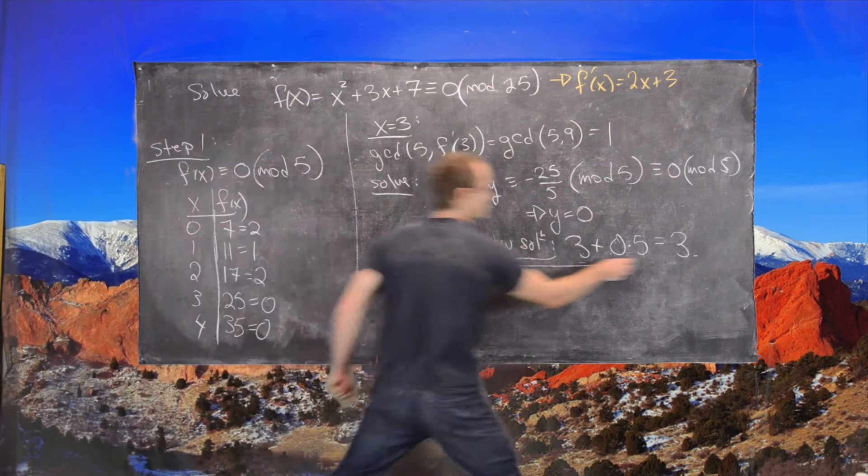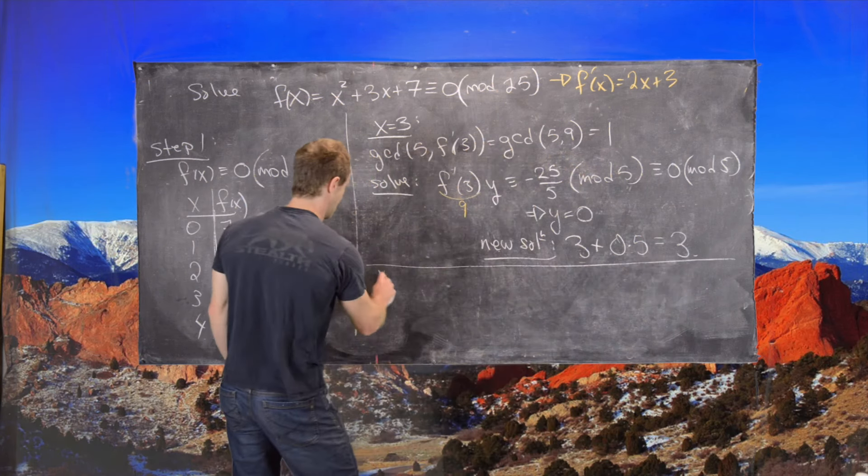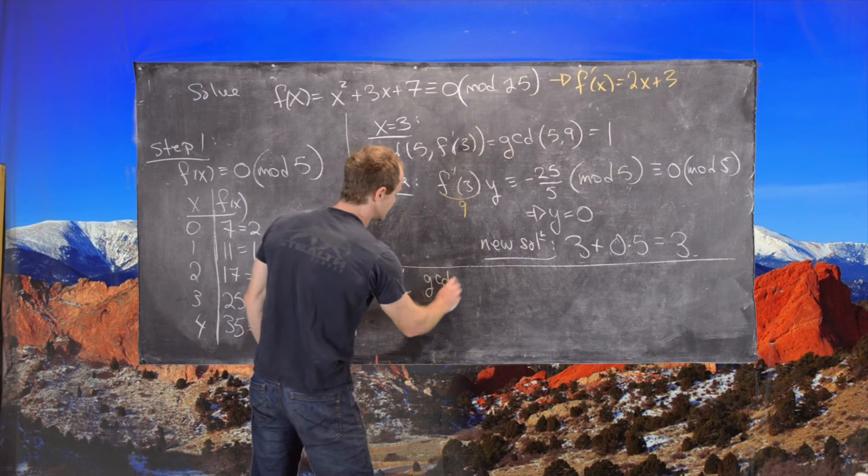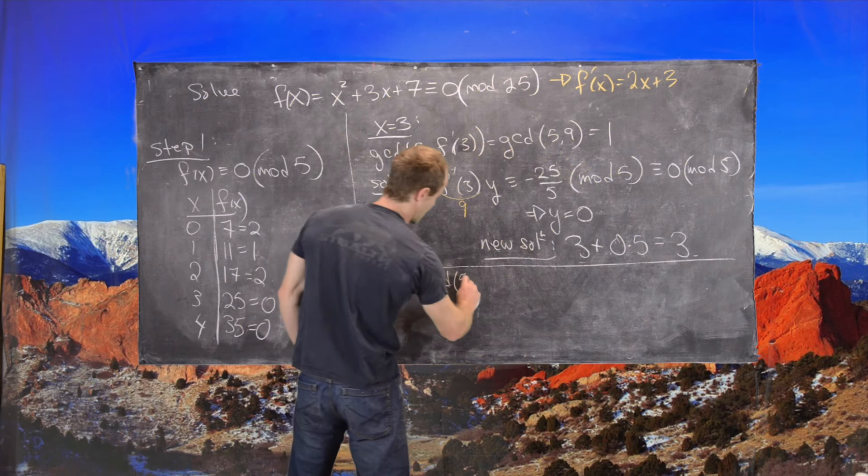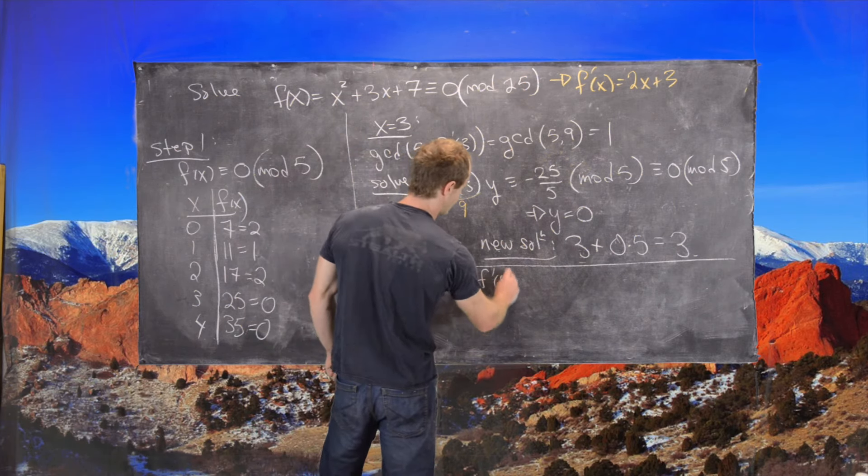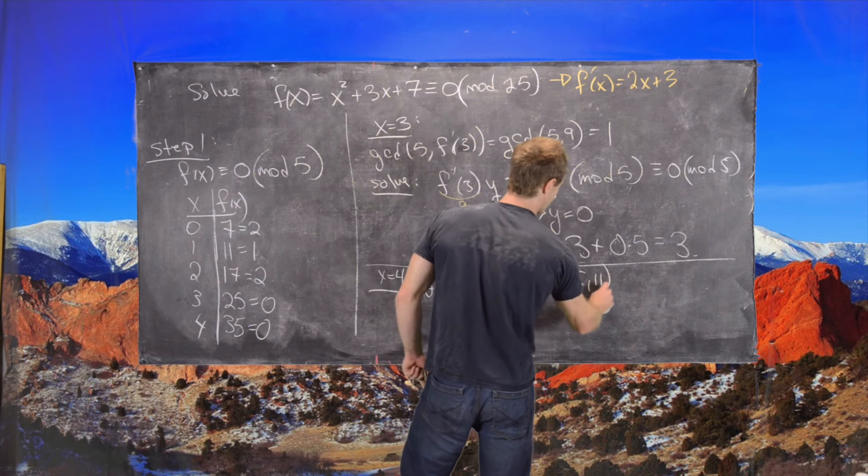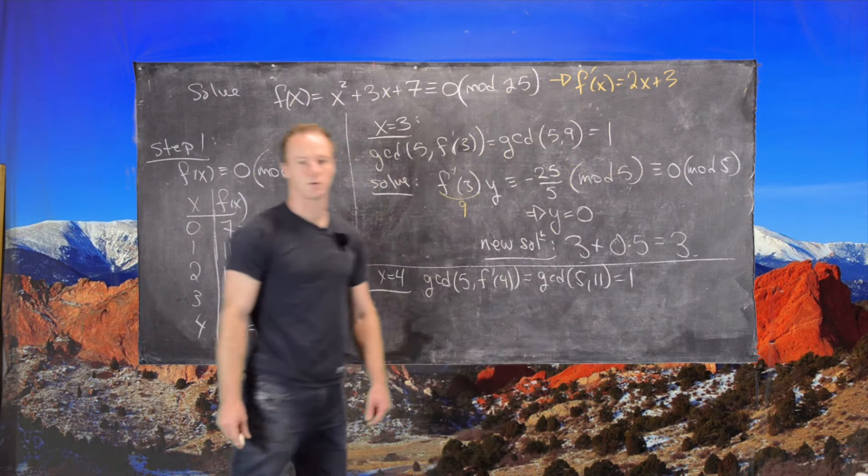So now let's look at the other solution. So let's look at x equals 4. And so we can check that the GCD of 5 with f prime of 4, so that's the GCD of 5 with 11, and that's also equal to 1.